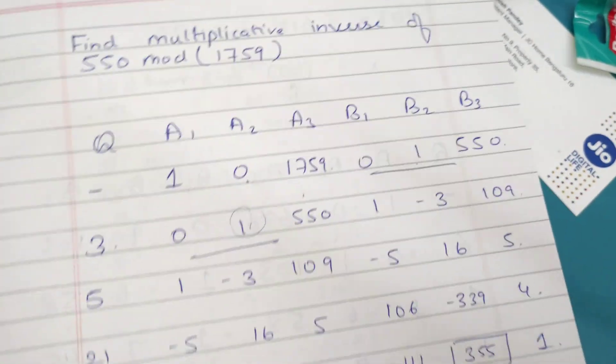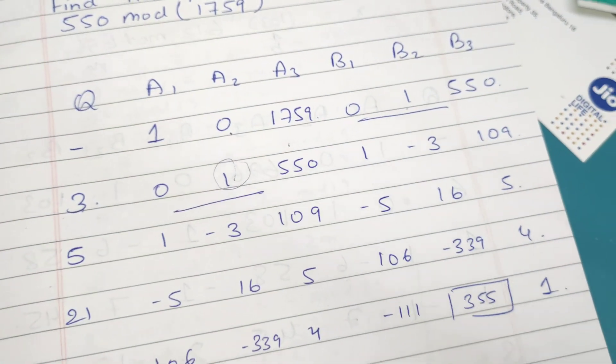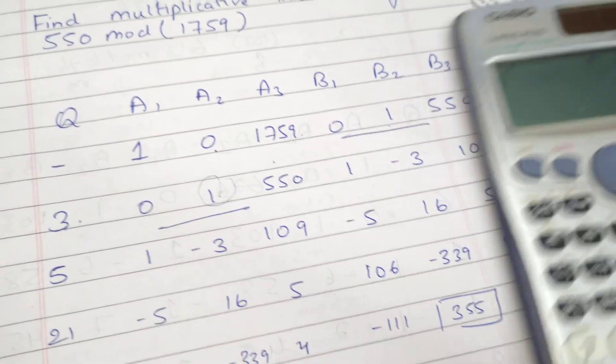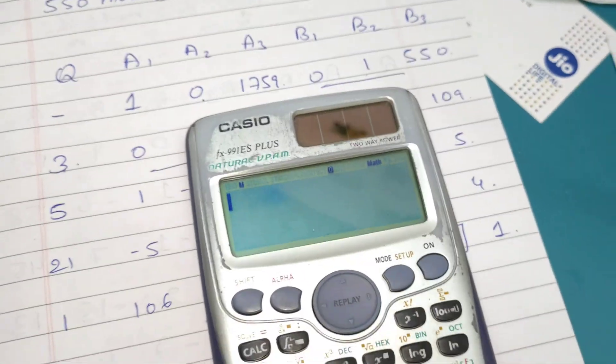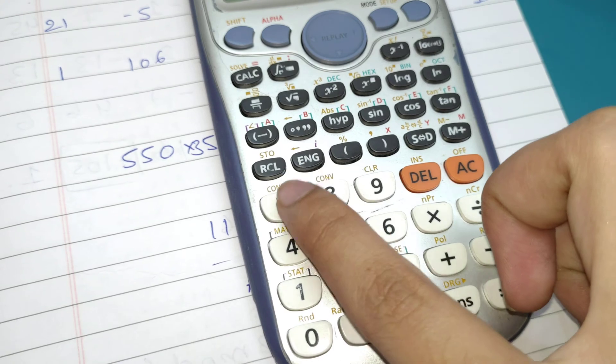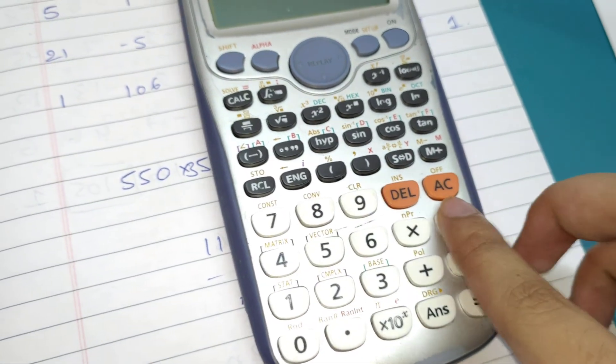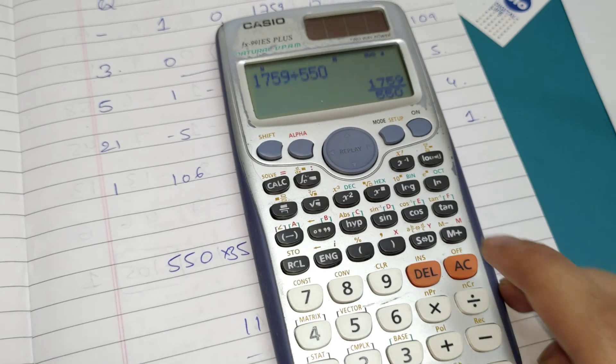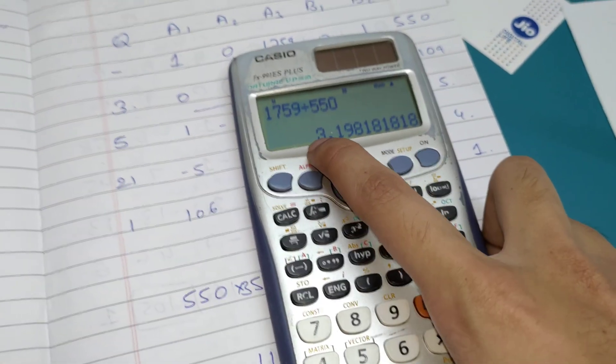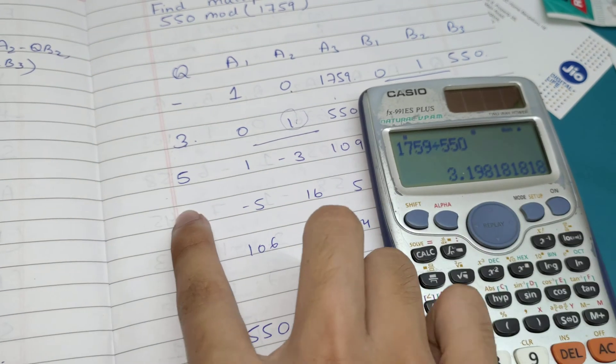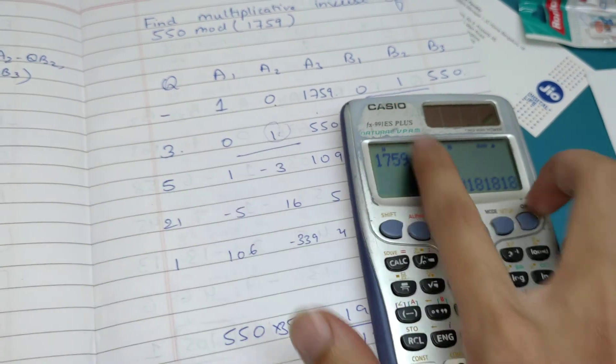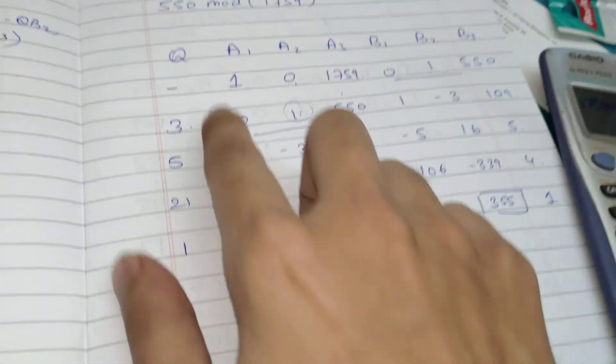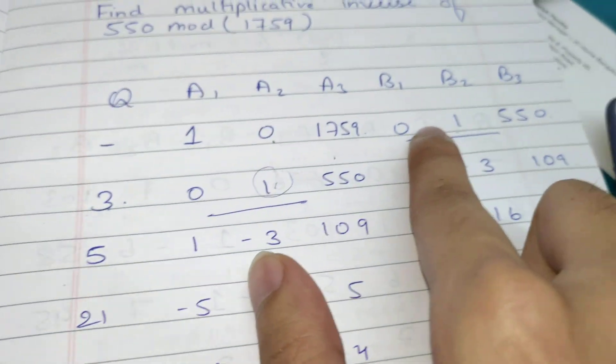First column is done. Next, let's take our calculator. We have 1759 divided by 550, so we get 3.19. Whatever you get here, that value you should write here. So basically 3 - we don't consider the decimals. We write 3, and then copy the values here: 0, 1, 550.